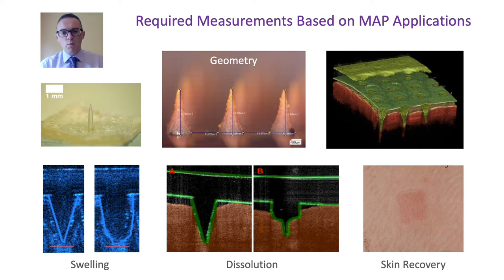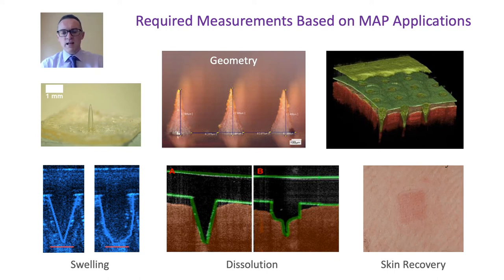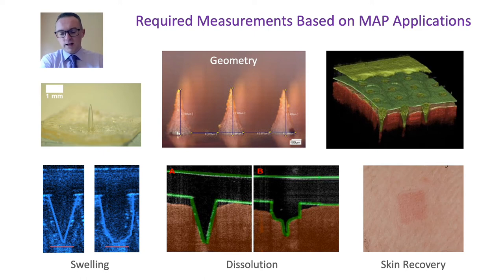In the bottom left-hand images, we can see a microneedle system inserted into skin and observe the dimensional changes after a few hours — it has swollen by taking up interstitial fluid. We also want to study skin recovery. This light micrographic image shows the skin immediately after microneedle insertion, with the typical mild erythema associated with insertion. Understanding how quickly pores close and erythema resolves is important for translational development.